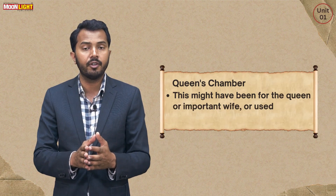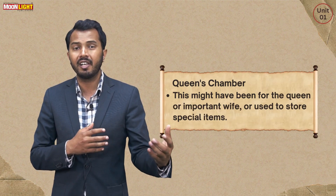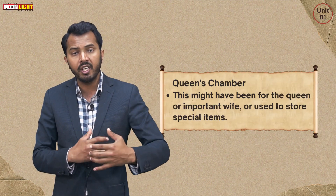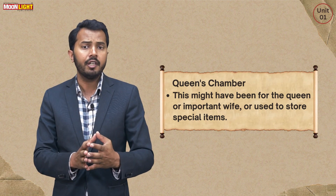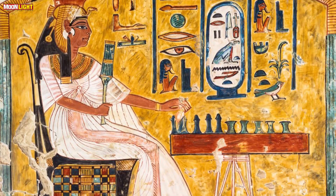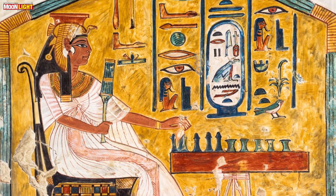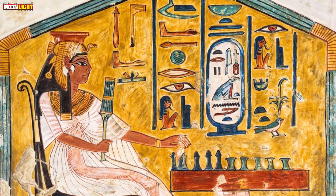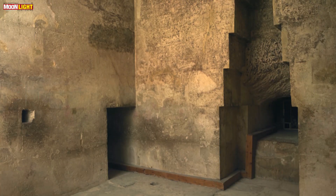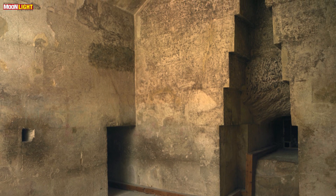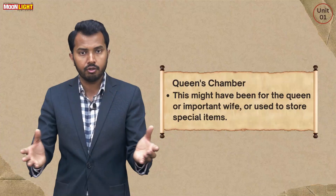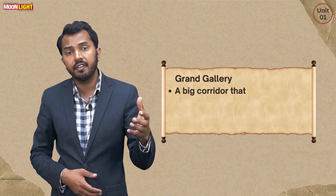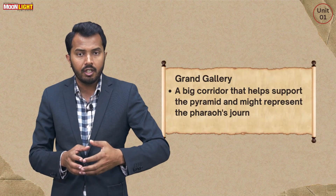The second chamber is known as the Queen's Chamber. It was primarily related to the queen or the important wives of the pharaoh or the kings. All items related to the queen and the wives of the pharaoh or king were stored there.